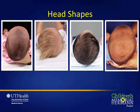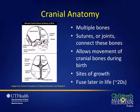A basic understanding of the anatomy of the infant skull is crucial. The skull is made up of seven bones including the paired frontal bones, parietal bones, and the lateral temporal bones. In the back there is a single occipital bone. Each of these bones is joined together by sutures or open joints. These sutures allow the brain and skull to grow in size over the first few years of life.